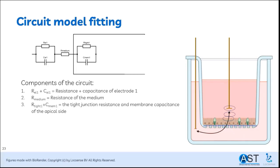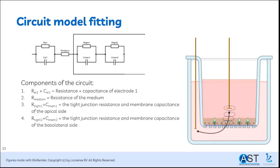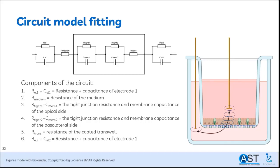Then we reach the apical side of the cells, where we again encounter an RC circuit. The current can choose to move through the tight junctions — a resistance called R-tight — or through the cell membrane, a capacitance called C-mem. The basolateral side of the cells also behaves as an RC circuit, where the current can again choose to flow through the tight junctions or the cell membrane. Past the cells, we reach the collagen-coated transwell membrane, which acts like a resistance. Lastly, we reach the other electrode, again a combination of resistance and capacitance.